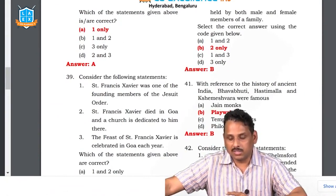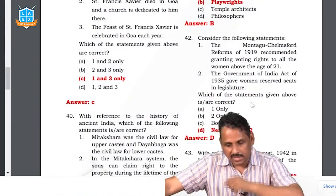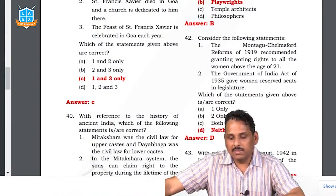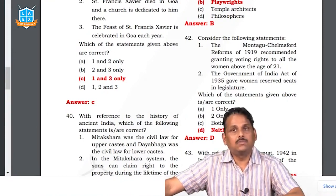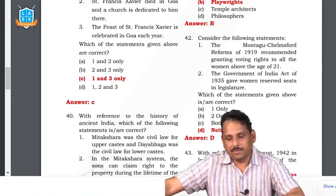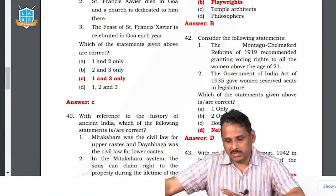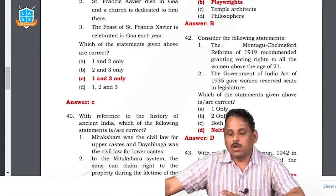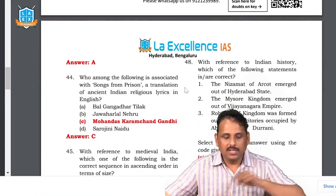With reference to the history of ancient India, Bhavabhuti and Hastimalla are famous playwrights. Question 41: the Government of India Act of 1935 gave women reserved seats in legislature — no, there were only separate electorates, not reserved seats. Reserved seats as a concept came after the Poona Pact. Voting rights to all women above the age of 21 were left to the provinces and were not decided by this particular act. So neither one nor two is the answer.